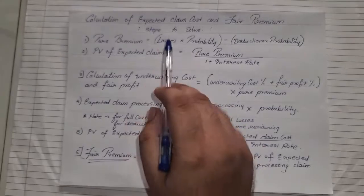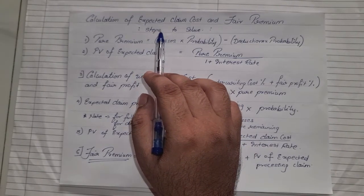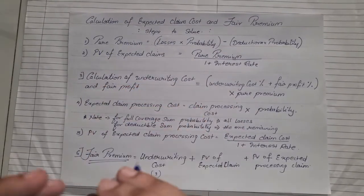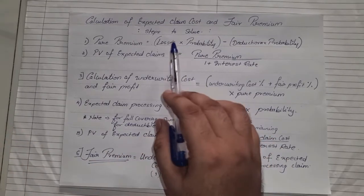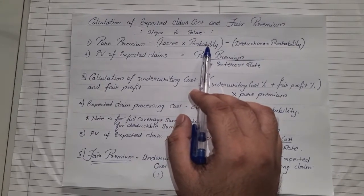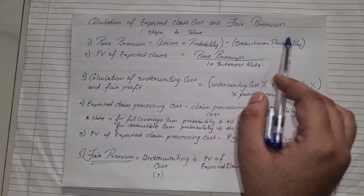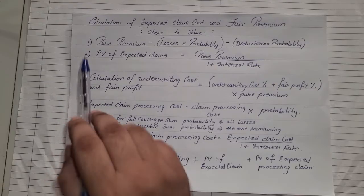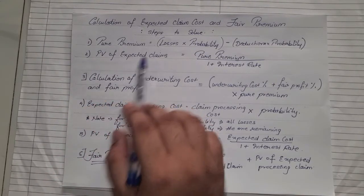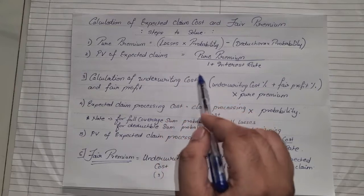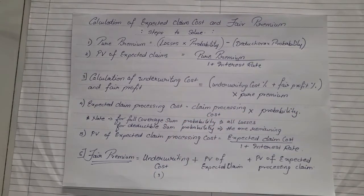Note down these steps very carefully. Step one: we need to first calculate pure premium. The formula states that we need to get the total of all the losses multiplied by their probability, and if there are deductions then we subtract deduction multiplied by probability. Step two: we need to find the present value (PV) of the expected claim. The formula is pure premium divided by one plus the rate of interest.